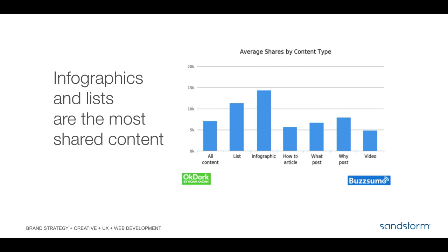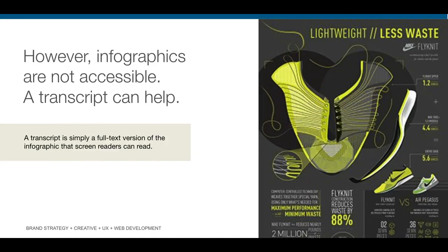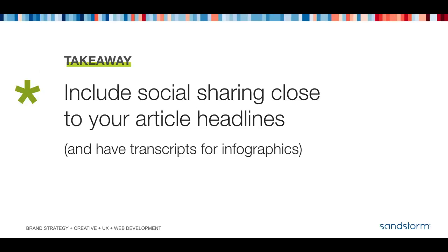Infographics and lists are the most shareable content and should be accessible to all users. Infographics can be a challenge for individuals with visual impairments and cognitive disabilities. We recommend creating a descriptive transcript to meet the wide range of user needs — full text versions are easier for screen readers to scan. The takeaway: include social sharing close to your headlines, and if articles have infographics, provide transcripts for accessibility.